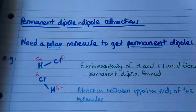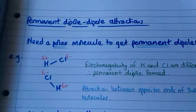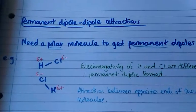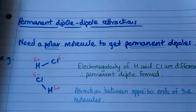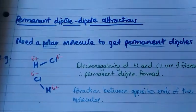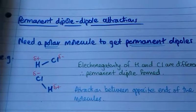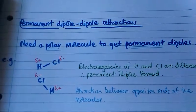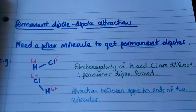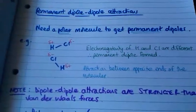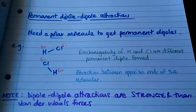Remember, these delta plus and minuses occur because the difference in electronegativities means that the more electronegative atom — in this case chlorine — pulls the electrons in the HCl bond more towards itself. It's important to note that dipole-dipole attractions are stronger than van der Waals forces.